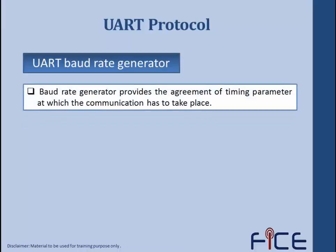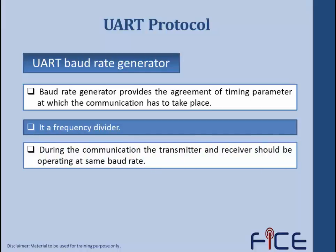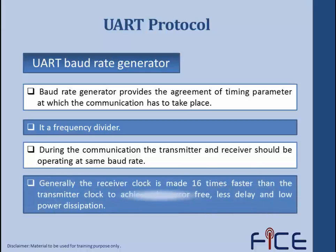The baud rate generator provides agreement on the timing parameters at which communication takes place. It maintains all timing parameters and synchronization between the transmitter and receiver. The baud rate generator is a type of frequency divider. During communication, the transmitter and receiver must operate at the same baud rate. Generally, the receiver clock is made 16 times faster than the transmitter clock, to achieve error-free, low-delay, and low power dissipation communication.